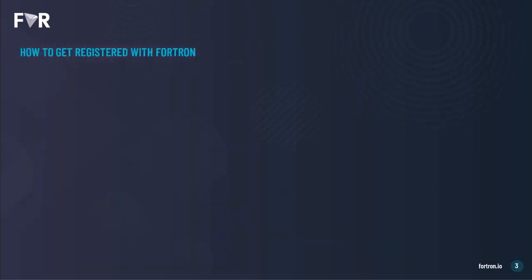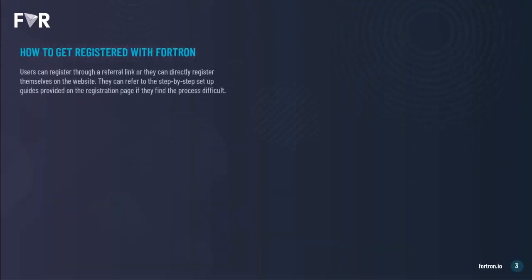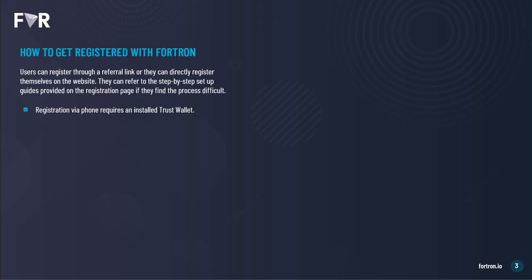The first step is to get registered with Fortron. Users can register through a referral link, or they can come directly and register themselves on the website. They can refer to our step-by-step setup guides on the registration page if they're finding the process difficult. You can register via phone, which requires an installed Trust Wallet, or via laptop or desktop computer, which requires a Tron Link wallet.